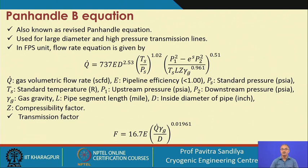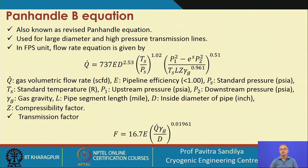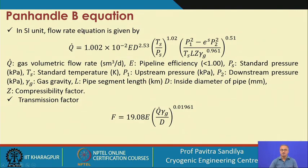We have another equation called the Panhandle B equation, which is a revised form of Panhandle A. It is generally used for large diameter and high pressure transmission lines. In the FPS system, the Panhandle B equation has the same basic structure as Panhandle A — the differences come only in the values of the various coefficients. These values have changed because some additional physics have been taken into account. The transmission factor expression is given, and similarly we have the Panhandle B equation for SI units.